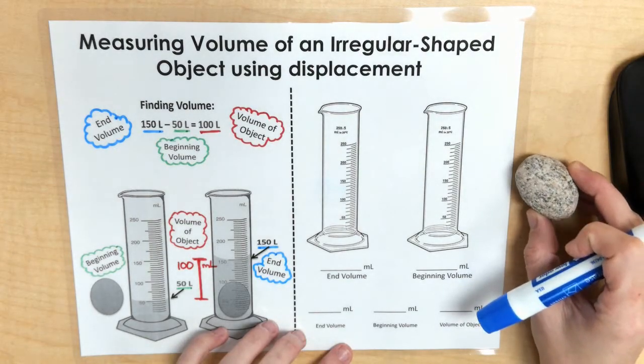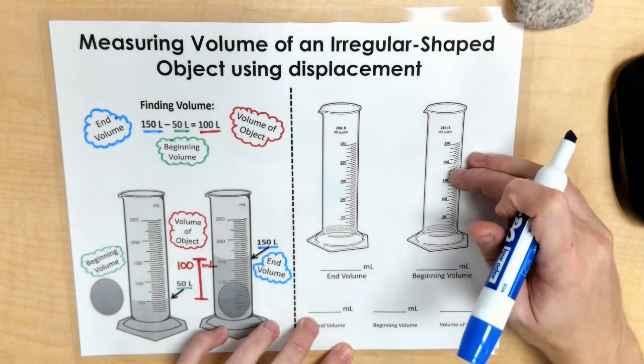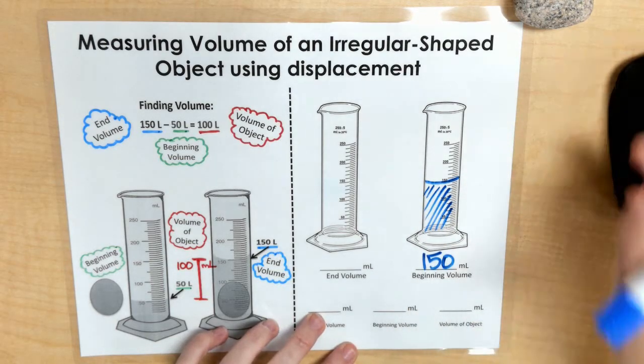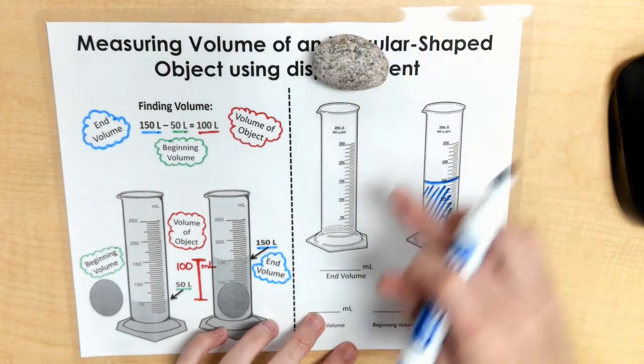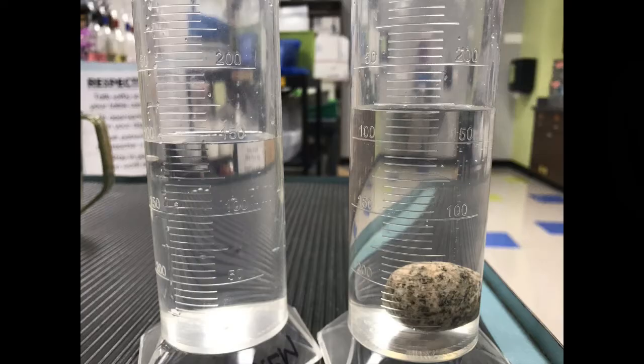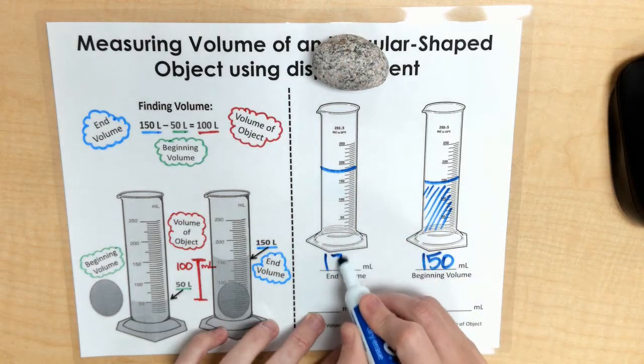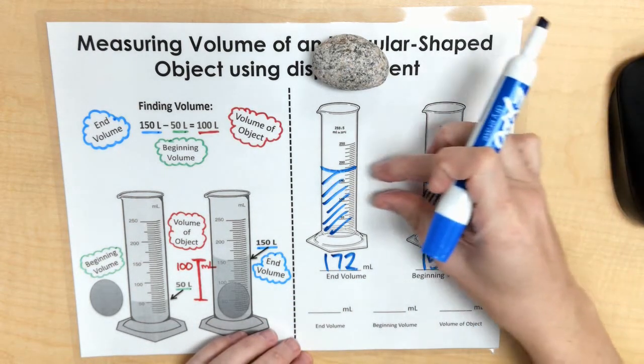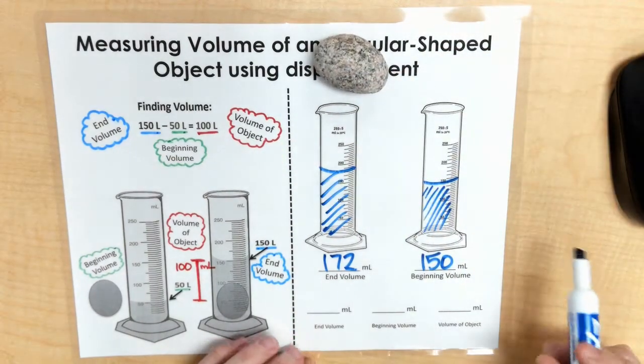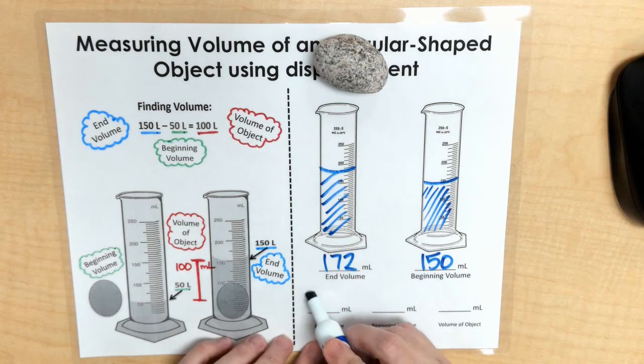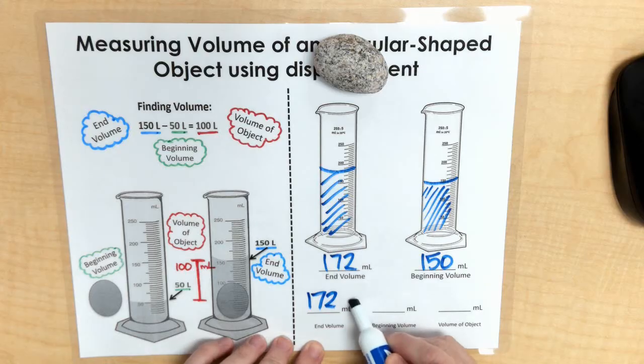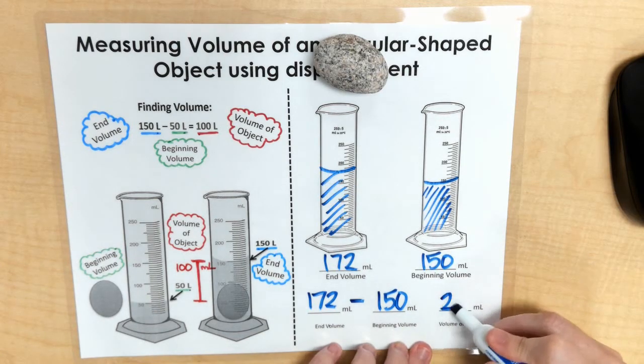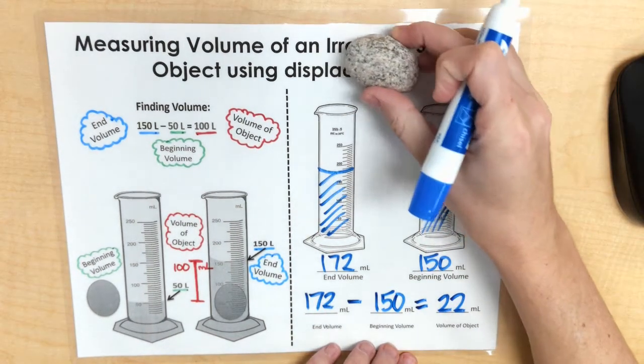So when I did my measurements on my rock, I started with a certain amount in my graduated cylinder. So the water went all the way up, 150 milliliters. But when I dropped my rock into my graduated cylinder, it rose up to 172 milliliters. So I have my beginning volume and I have my ending volume and I'm trying to figure out that little bit of difference because that tells me the volume of my rock. So I start with my ending volume, which we said was 172. I'm going to subtract my beginning volume, which we know was 150, and that leaves me with 22 milliliters and that's the volume of my rock.